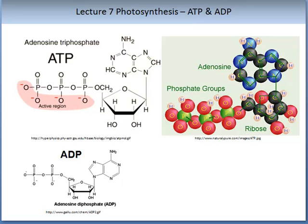Let's start by looking at some of the compounds. The compound on your screen, top left-hand side, is ATP, also known as adenosine triphosphate. This is a very important compound for life on Earth. The left-hand side shows the chemical formula and structure; the right-hand side is a modelled illustration. ATP is produced from the compound adenosine diphosphate, or ADP.